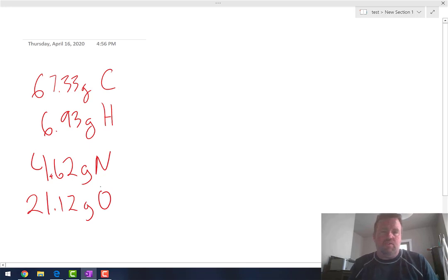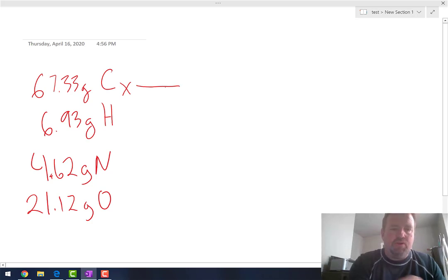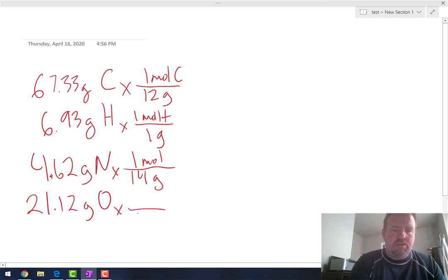So for each one of those, you simply convert that percent to grams. And then the next step is you convert those grams to moles. So there are 12 grams in one mole of carbon. I get that from the periodic table. There's one gram in one mole of hydrogen. All of these masses are coming from the periodic table. The nitrogen has a mass of 14 grams per mole. And oxygen has a mass of 16 grams per mole.